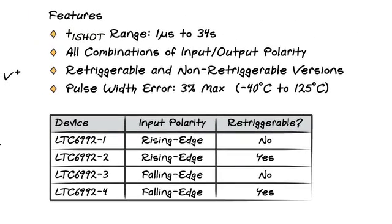The one-shot time range is 1 microsecond to 34 seconds. By combining the triggering selectability with the ability to select the output polarity via the div pin A-to-D, all possible I/O combinations are available.